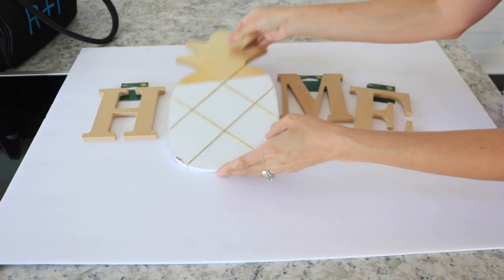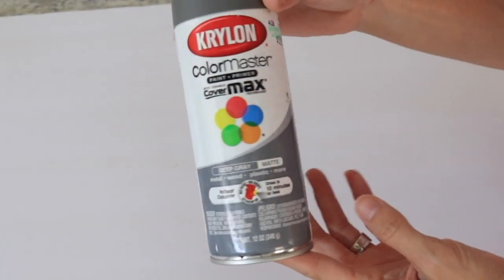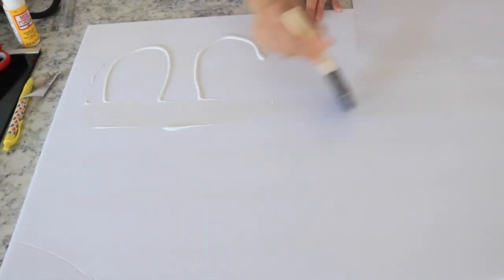So the first thing I'm going to do is take all of these little pieces outside and spray paint them with my Krylon deep gray matte spray paint, because I'm going to be making them look like metal.